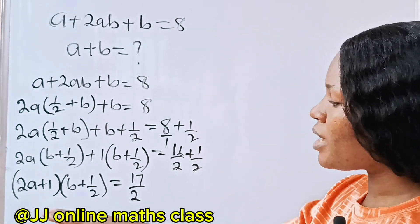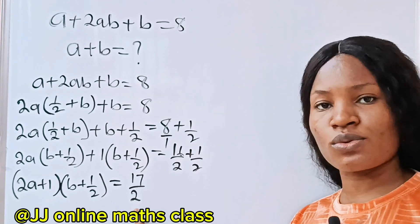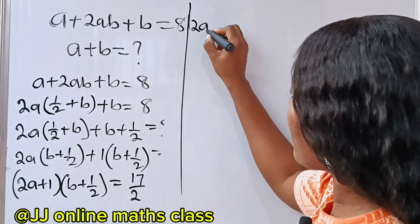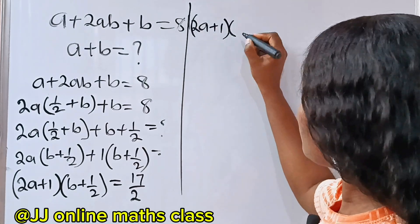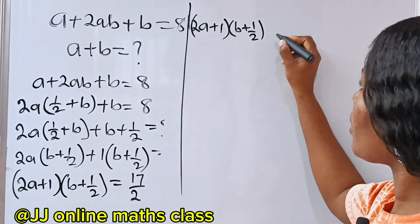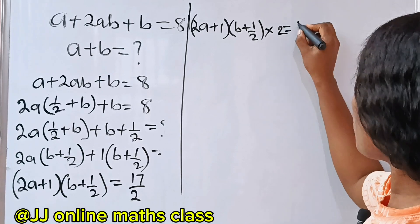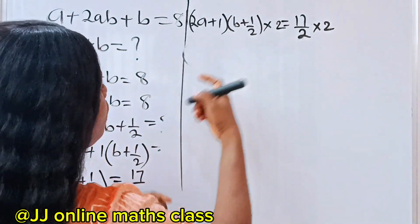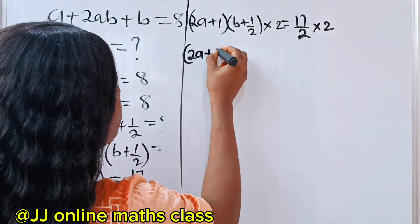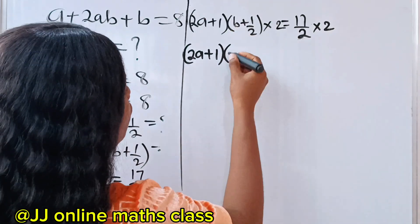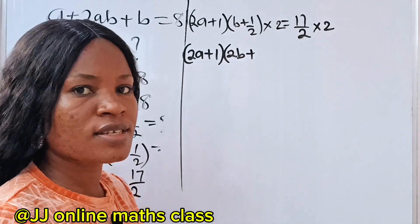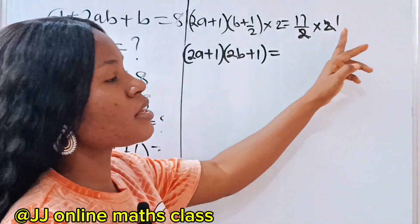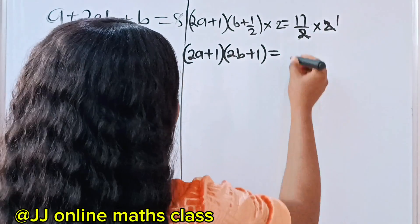Now we need to remove the fraction. Let's multiply both sides of this equation by 2. So (2a + 1) multiplied by (b + ½) multiplied by 2 equals 17 over 2 multiplied by 2. Expanding: (2a + 1) times (2b + 1) equals 17.